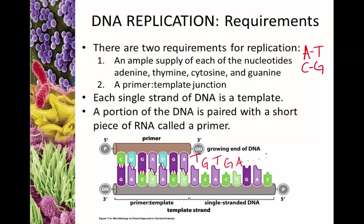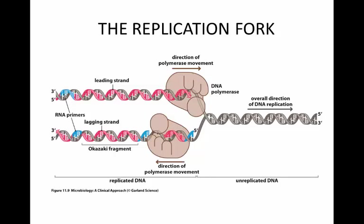Each single strand of DNA will be a template, so we're actually going to do this in duplicate, once for each side of the single-stranded DNA. That short piece of RNA is brought in by something called primase. It usually ends up looking something similar to this.